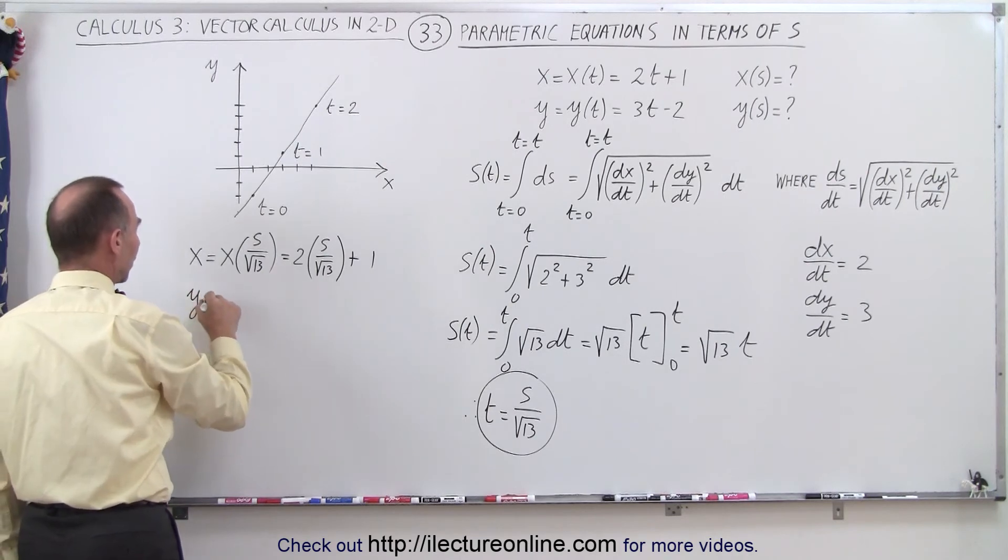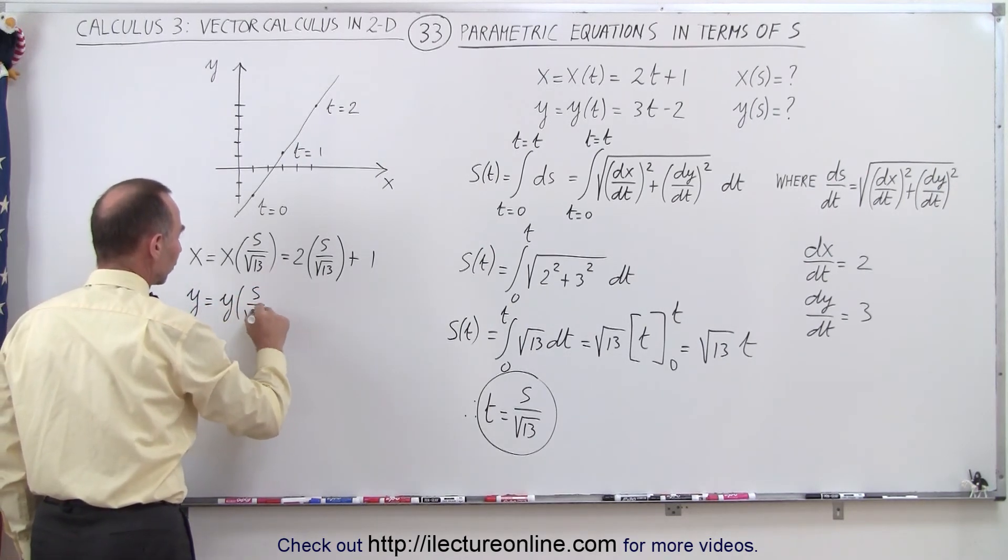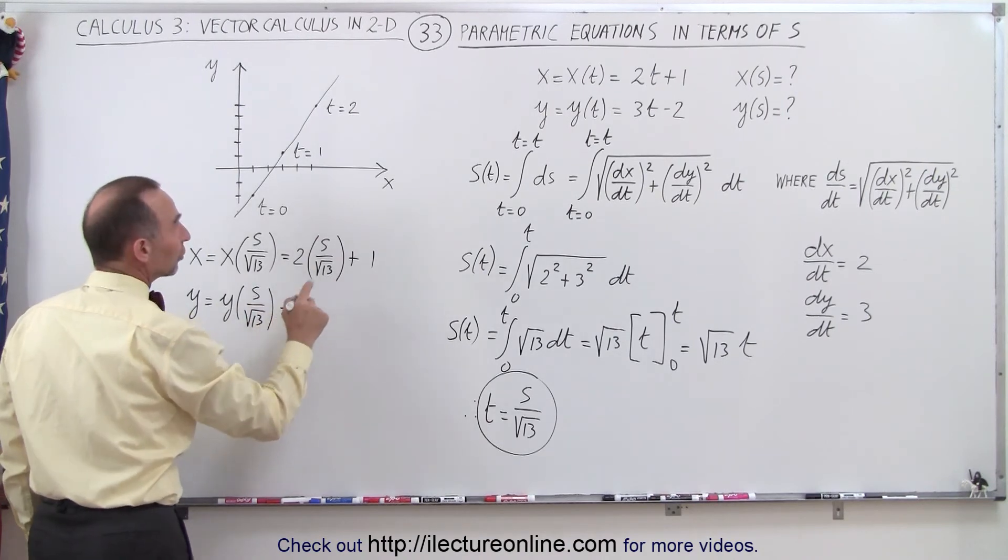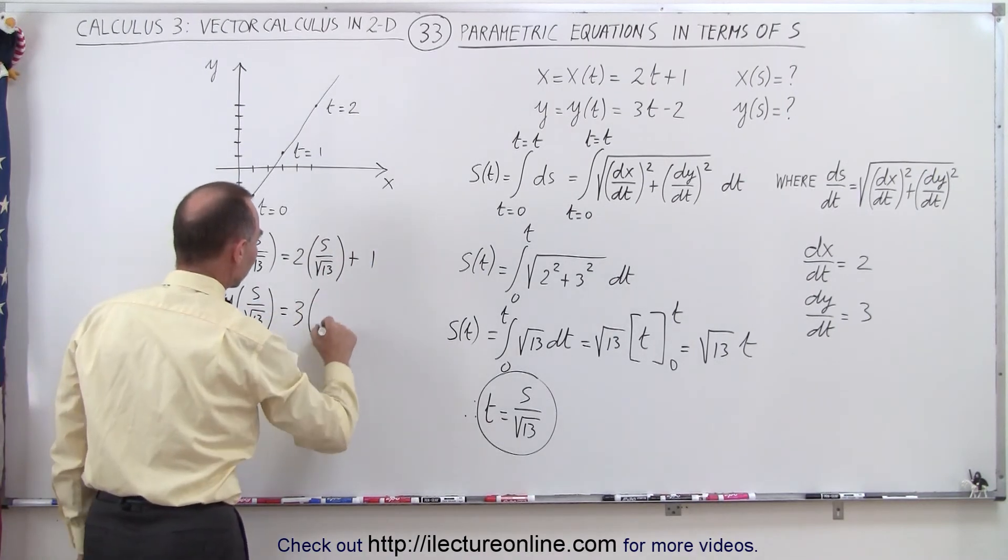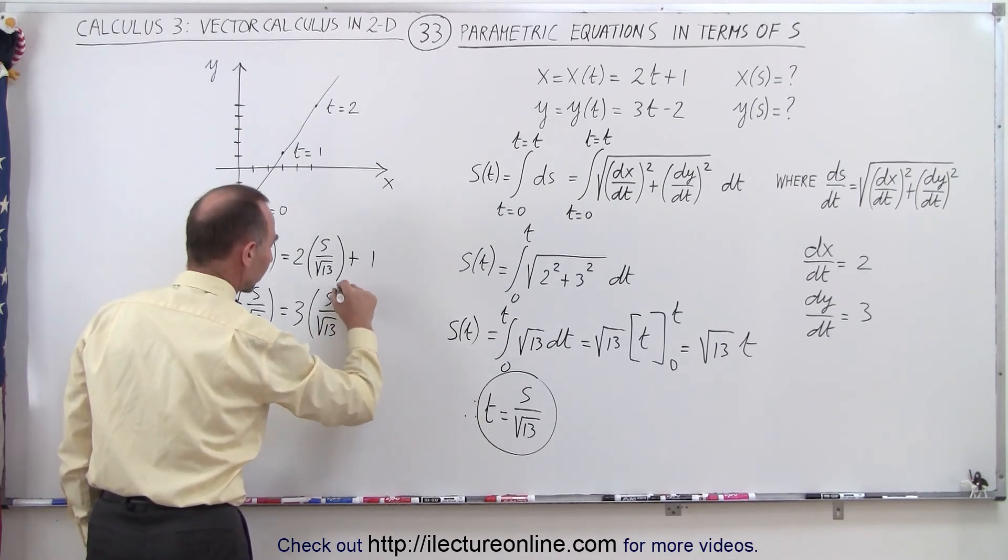And for y, we could say y is equal to y as a function of t, which is s divided by the square root of 13, which is equal to 3 times s divided by the square root of 13 minus 2.